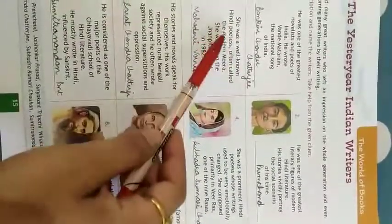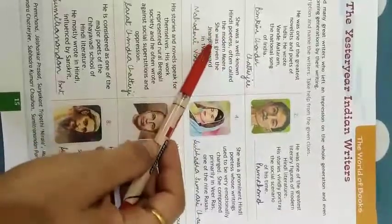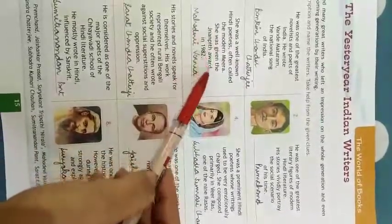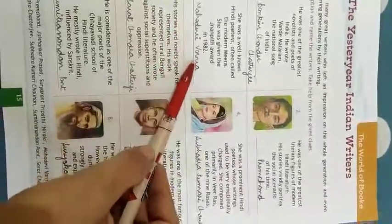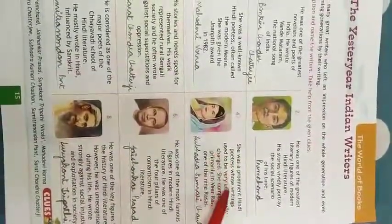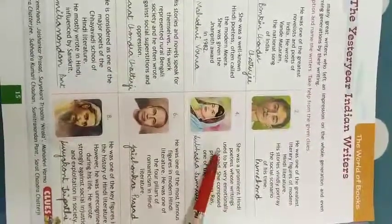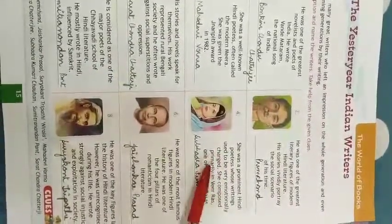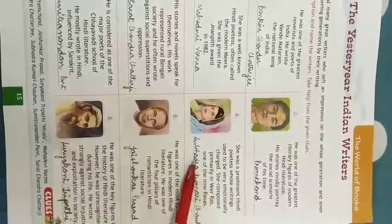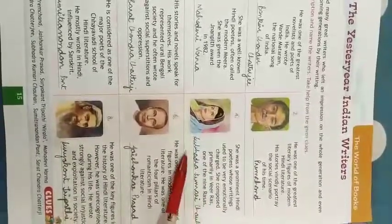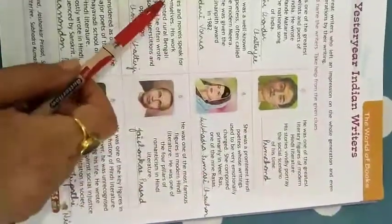Next, she was a well-known Hindi poetess often called the modern Meera; she was given the Jnanpith Award in 1982 — she was Mahadevi Varma. Next, she was a prominent Hindi poetess whose writings were very emotionally charged; she composed primarily in Vira Rasa, one of the nine rasas — she is Subhadra Kumari Chauhan.